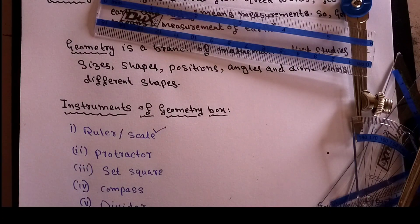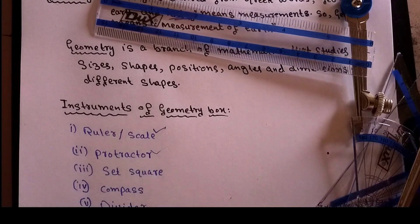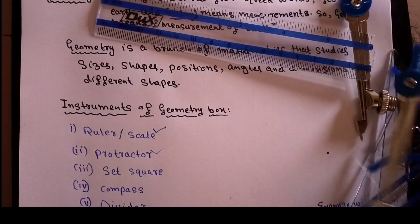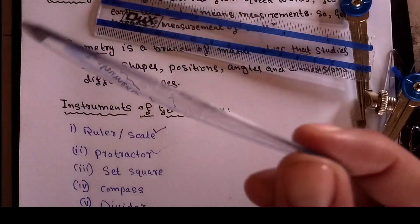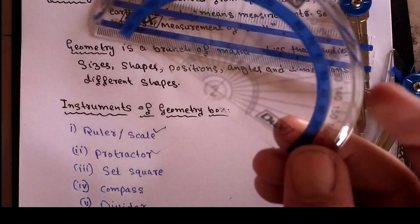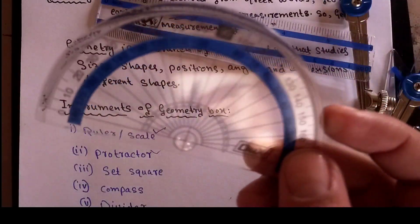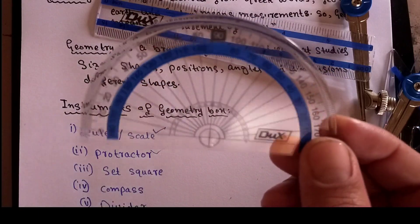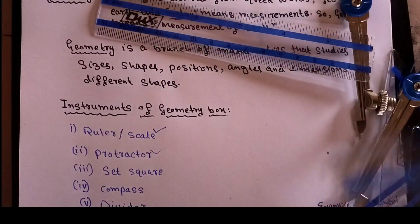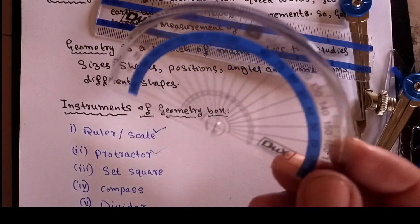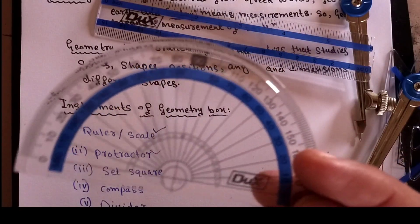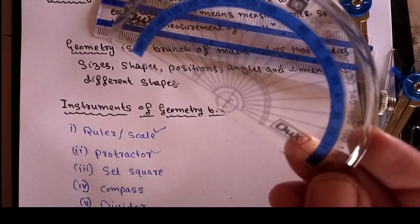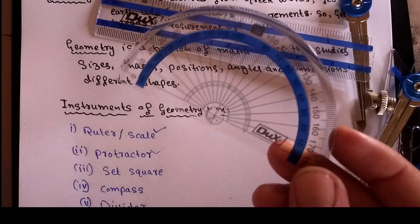The second tool we have is the protractor, also called a 'D'. The function of the protractor is that with its help we can draw angles, or measure how large an angle is - that is, how many degrees an angle is. With this D-shaped protractor we can measure and draw angles.